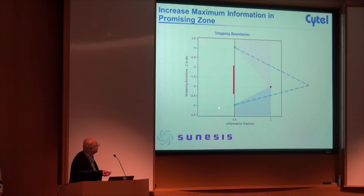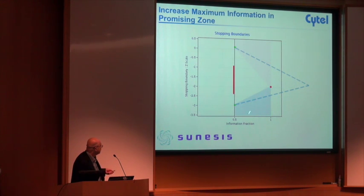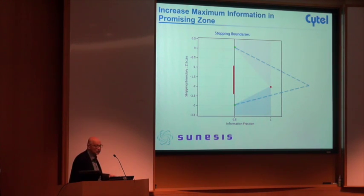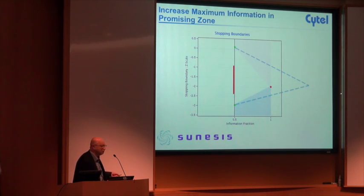Here's a picture of that type of design. The original group sequential design has a blue efficacy region where you're reducing the hazard, and a pink futility region. The red line is the promising zone. If at the interim analysis you enter into the zone, there's a one-time increase in the number of events by 50%.